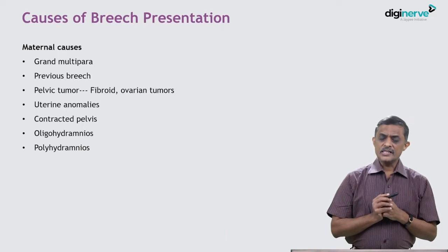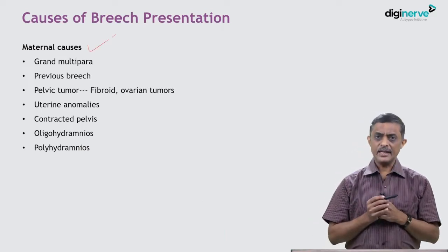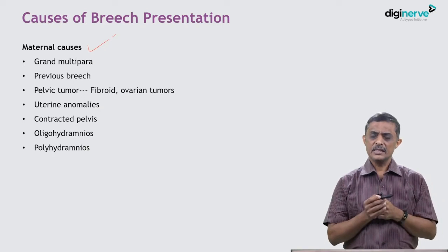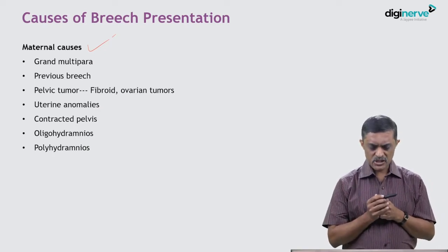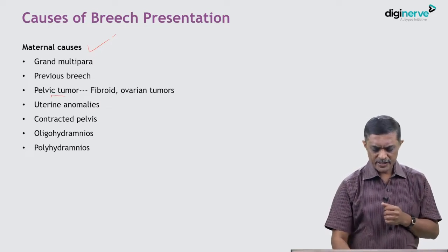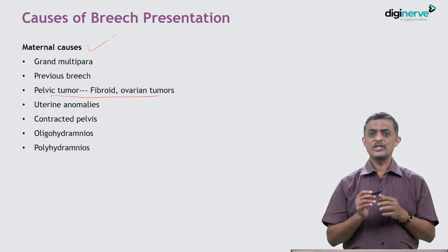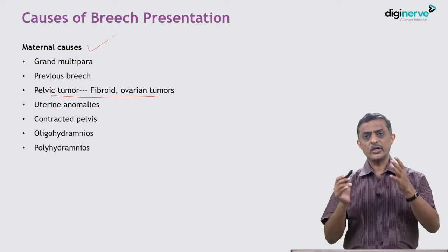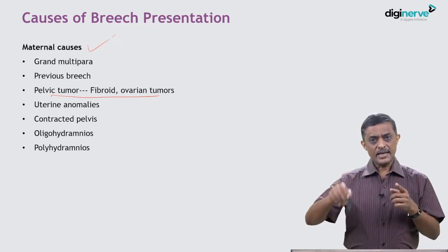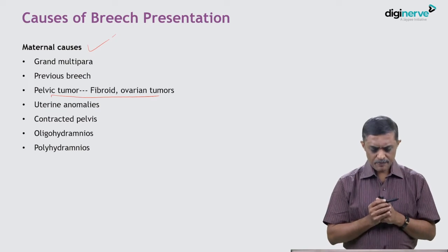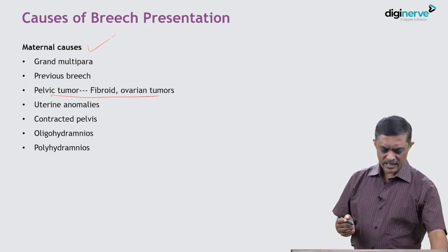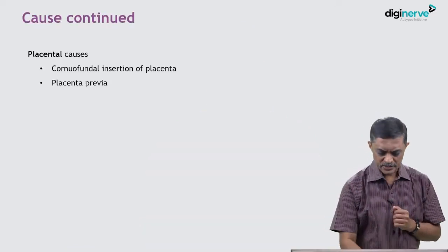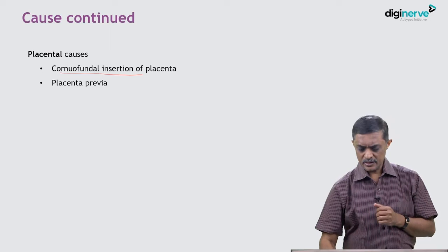Causes of breech presentation — maternal causes: in grand multipara, because of available space the baby can persist in breech. Previous breech presentations, pelvic tumors such as fibroids or ovarian tumors which prevent movement of the baby, anomalies of the uterus like unicornuate, bicornuate, or septate uterus where the baby accommodates to available space, and contracted pelvis — all are maternal causes.